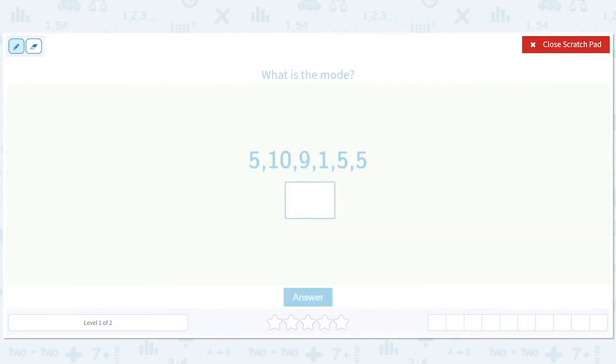So in this case, we've got five, five, five. That's the thing that shows up most. What's the mode? Five. It's that simple.